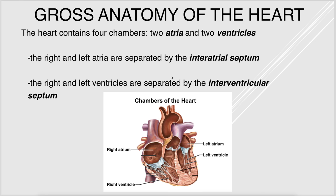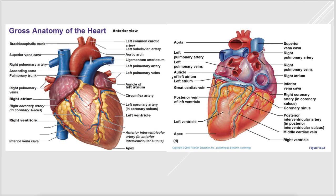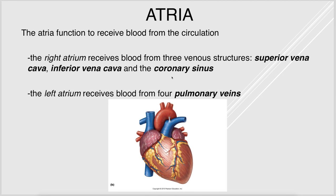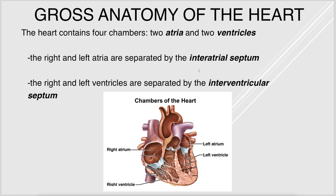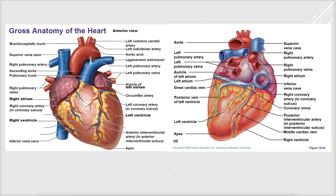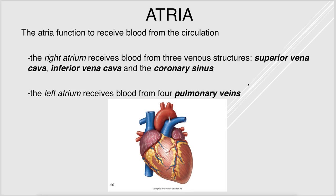The heart has four chambers: two atria and two ventricles. The atria are separated by the interatrial septum, and the ventricles are separated by the interventricular septum. The right and left sides of the heart do not communicate with each other. The atria are the receiving chambers — the right atrium receives blood from the superior vena cava, inferior vena cava, and the coronary sinus, which brings blood back from the coronary veins. The left atrium receives blood from the pulmonary veins coming from the lungs, carrying oxygenated blood.